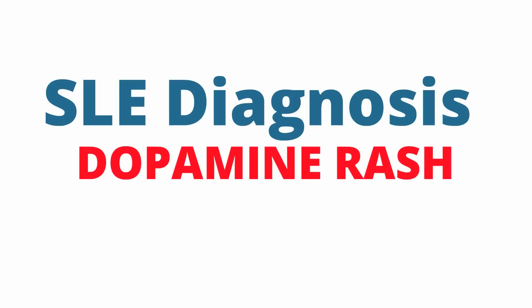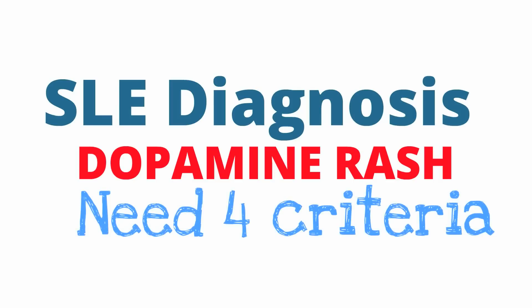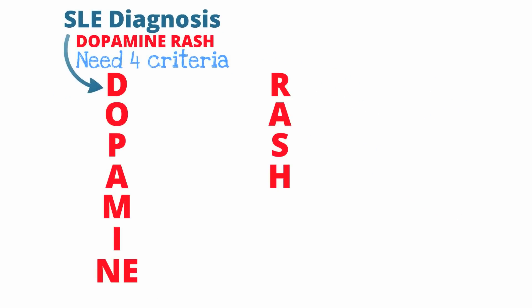The most important step in understanding any disease is grasping how to diagnose the disease. There are many mnemonics that can aid in remembering all the diagnostic criteria. The one I remember is called 'dopamine rash.' You need to have at least four criteria met to diagnose lupus. The D represents discoid rash — a disc-shaped rash that is flat but has pronounced redness at the borders.